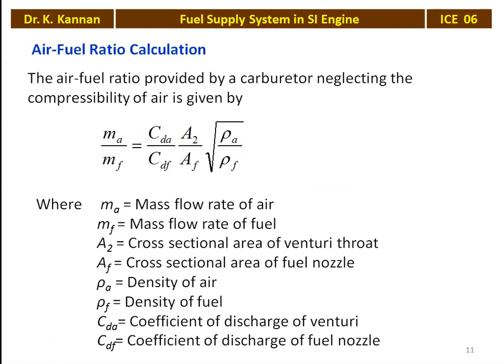To calculate the air fuel ratio: mass of air divided by mass of fuel = (CDA / CDF) × (A2 / AF) × √(ρA / ρF). Here MA is the mass flow rate of air, MF is the mass flow rate of fuel, A2 is the cross-sectional area of the venturi throat, AF is the cross-sectional area of the fuel nozzle, ρA is the density of air, ρF is the density of fuel, CDA is the coefficient of discharge of the air entry, and CDF is the coefficient of discharge of the fuel nozzle. Substituting all values gives the air fuel ratio for the petrol engine.